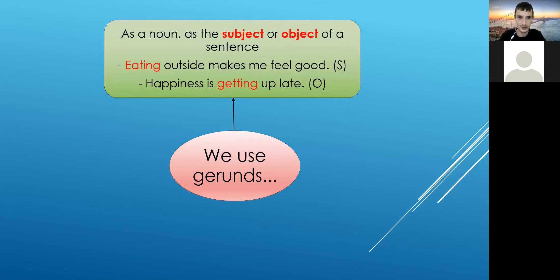Nice. I really enjoy doing exercise is our example. Let's see the next part. We use gerunds. How do we use gerunds? The first one. As a noun, as subject or object of a sentence. First example: eating outside makes me feel good. Happiness is getting up late.